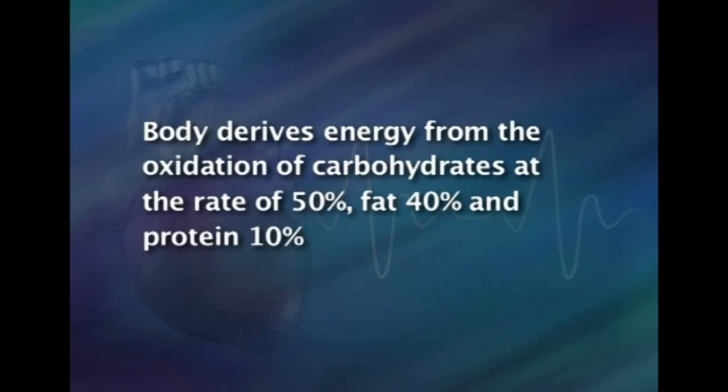For pure glucose the respiratory quotient is 1, meaning carbon dioxide exhaled equals oxygen consumed. For fatty acids the RQ is 0.7, and for protein it is 0.82. The respiratory quotient at the post-absorptive stage when basal metabolism is determined is 0.82, and the body derives energy from oxidation of carbohydrates at 50%, fat at 40%, and protein at 10%. The respiratory quotient for alcohol is 0.66. Over 24 hours, the RQ should reflect the diet composition if the individual is in energy balance.